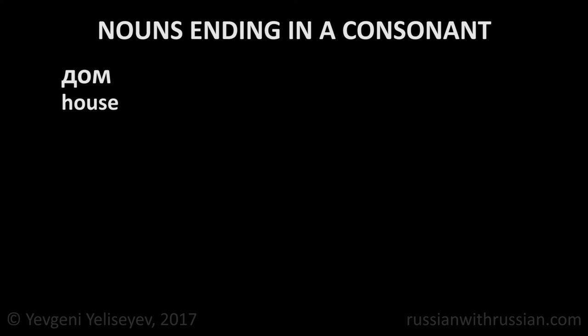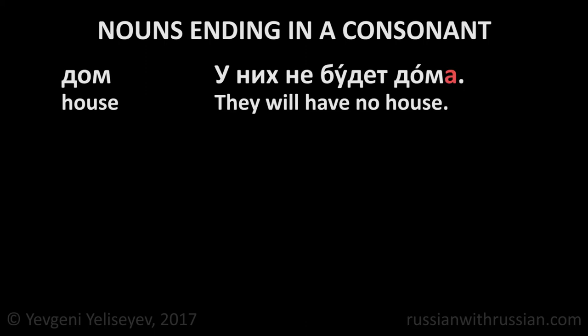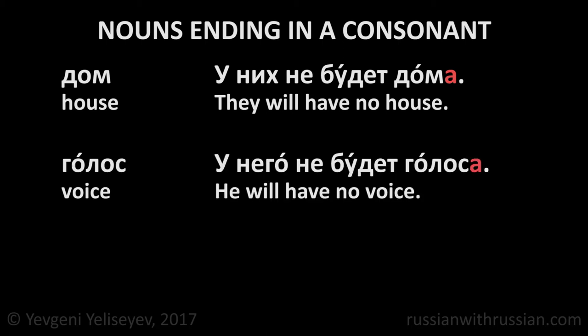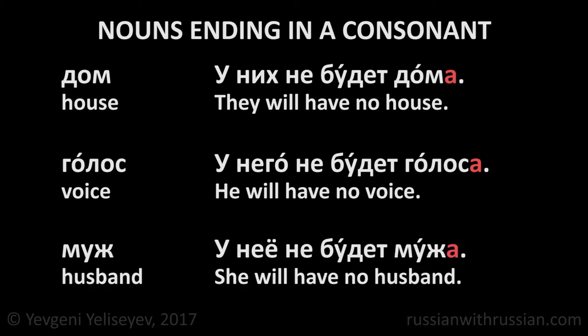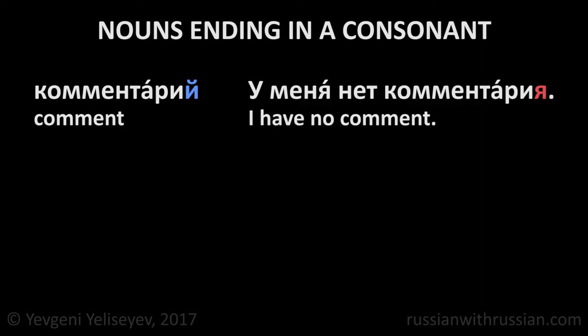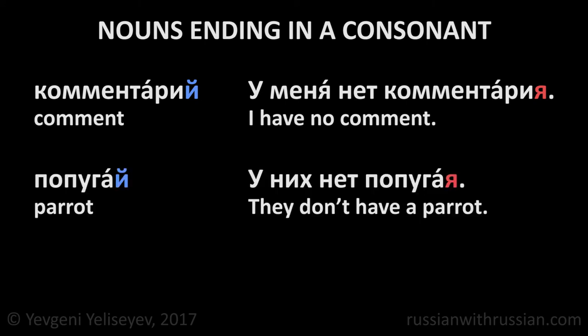Nouns ending in a consonant: Дом — house. У них не будет дома. They will have no house. Голос — voice. У него не будет голоса. He will have no voice. Муж — husband. У неё не будет мужа. She will have no husband. Комментарий — comment. У меня нет комментария. I have no comment. Попугай — parrot. У них нет попугая. They don't have a parrot.